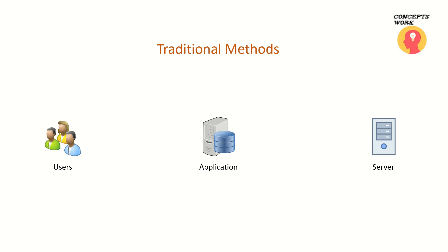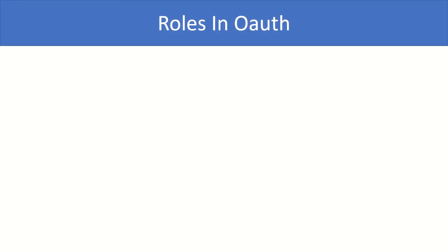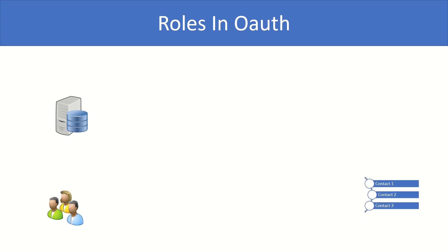Resource is basically the core data — the raw information which your application will be accessing, protected by a specific API, and your application will make the necessary calls to get that access. For example, let's say a couple of users are going to access a particular application whose primary task is accessing contact information. Now, this information must be protected by some entity — let's say that entity is a particular server.